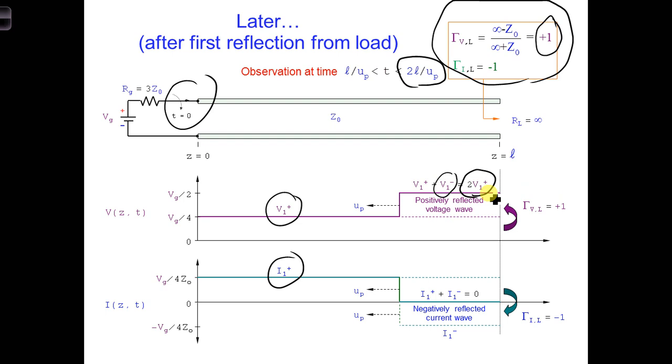Let's look for a moment at the current reflection coefficient. It is defined as I1 minus at L over I1 plus at L. And that's equal to minus V1 L over Z naught over V1 plus L over Z naught. And again, the minus sign comes from the fact that the current is flowing in the minus Z direction, so it has a negative amplitude.